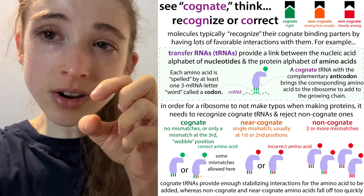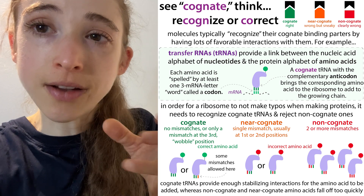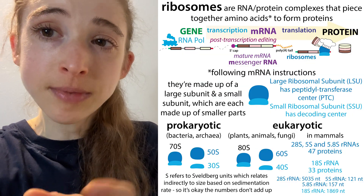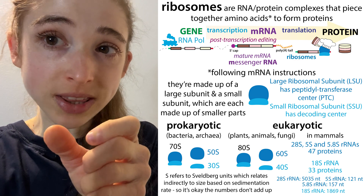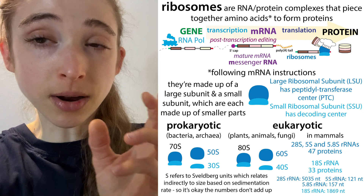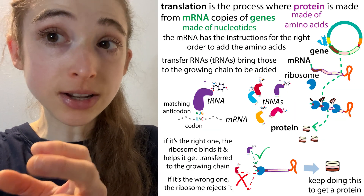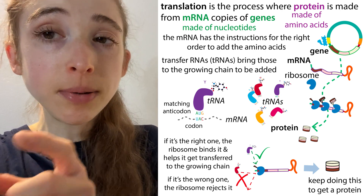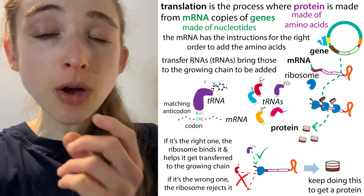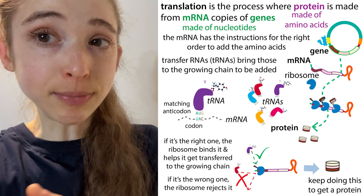It's not just the codon-anticodon interaction — you also have interactions with the RNA of the ribosome itself, because the ribosome is actually largely made up of RNA. This can interact with the tRNA as well, especially thanks to things like RNA modifications. So in the case where you have the cognate tRNA, you get stabilization. But if something comes in that is non-cognate — not matching — well now it's going to be more easily discriminated and the ribosome is then able to reject it.